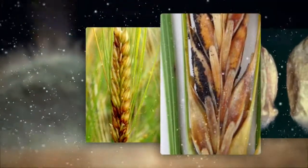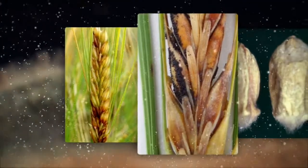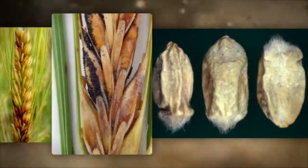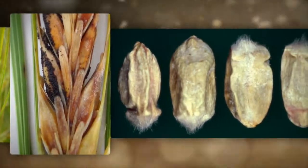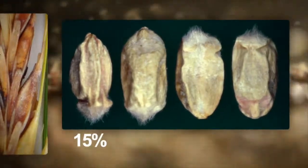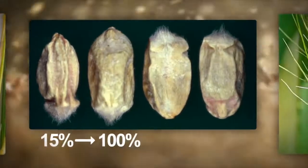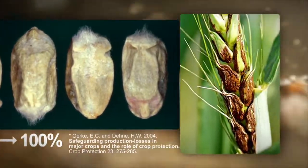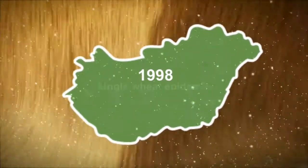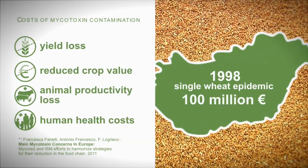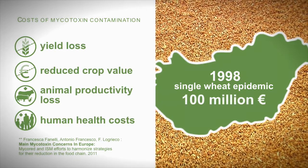Mycotoxin-producing fungi, or crop mold, are known to contaminate food and feed crops. Toxic contamination is responsible for an average of 15% yearly crop loss, but for individual crops fungal losses can reach a hundred percent. In 1998, direct and indirect losses through a single wheat epidemic in Hungary alone were estimated to be up to a hundred million euros.